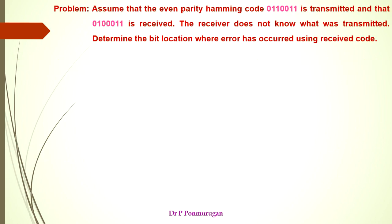Let's take this problem. Assume that the even parity Hamming code 0110011 is transmitted and that 010011 is received. The receiver does not know what has been transmitted and must determine the bit location where the error has occurred using the received code.